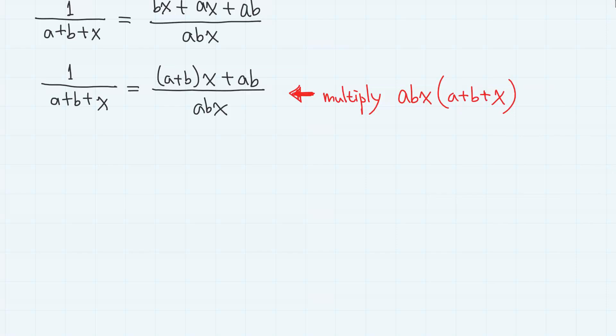Now, we multiply abx times a plus b plus x in order to remove the fractions. Then, we have on the left-hand side, we simply have abx. Then, on the right-hand side, we have a plus bx plus ab times a plus b plus x.